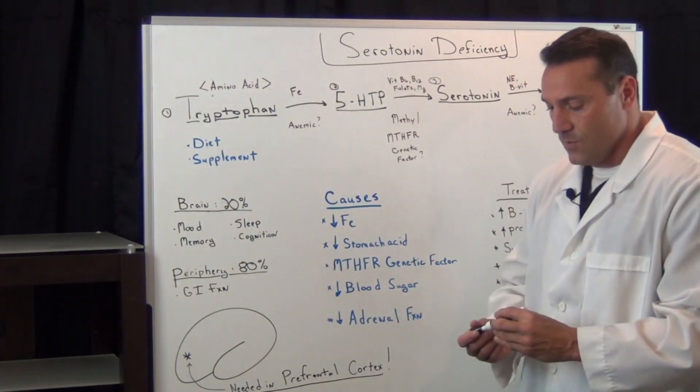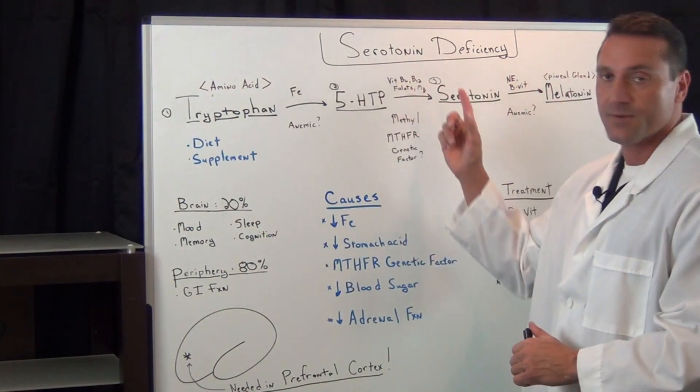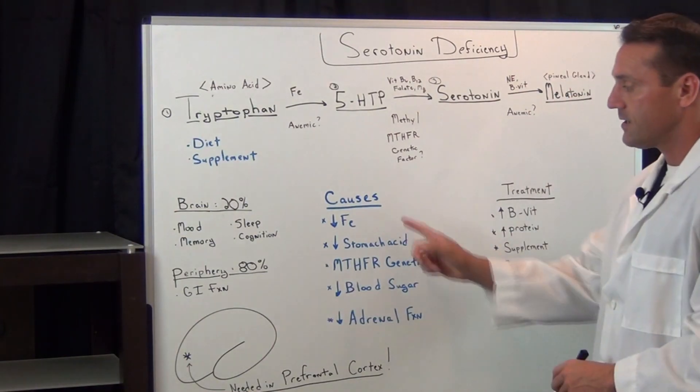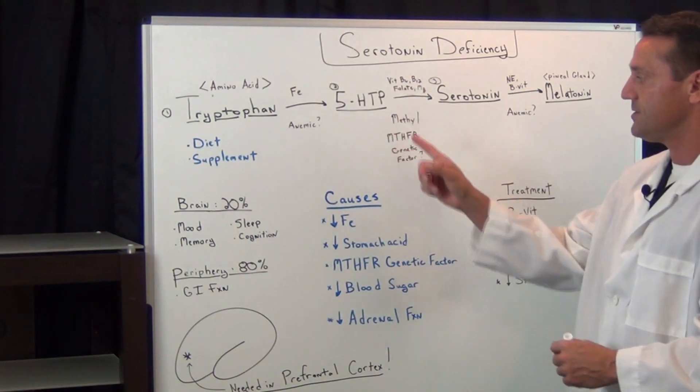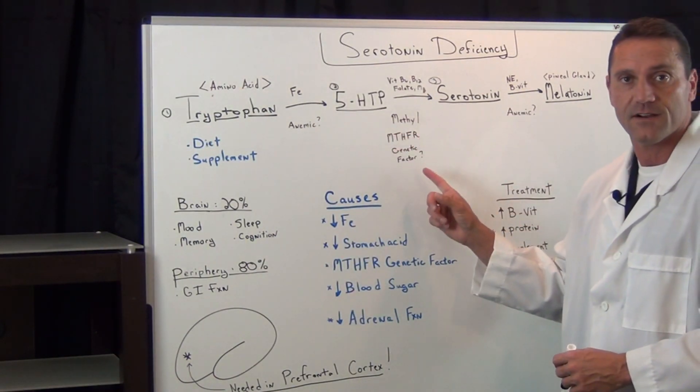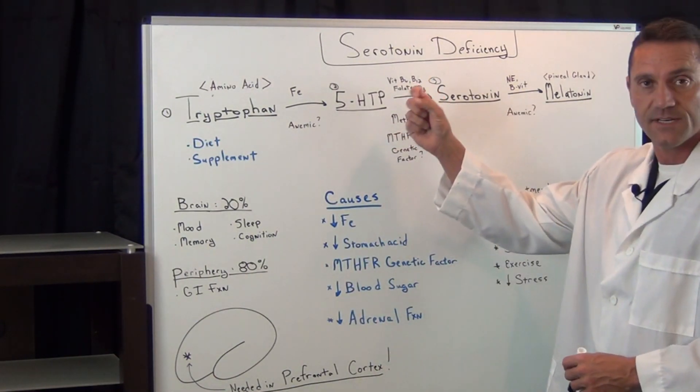So what would cause a deficiency in serotonin production? One, it could be low iron. Now, again, if you're anemic, if you're not absorbing the B vitamins due to the MTHFR genetic factor, sure, you're not going to produce enough serotonin.